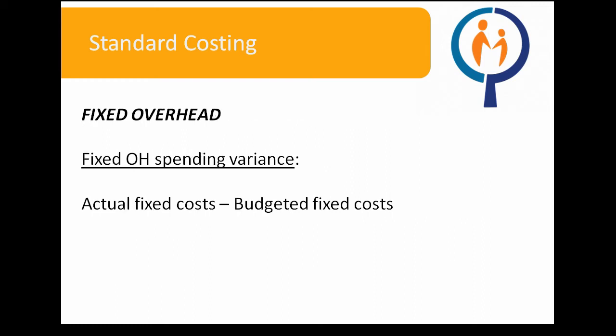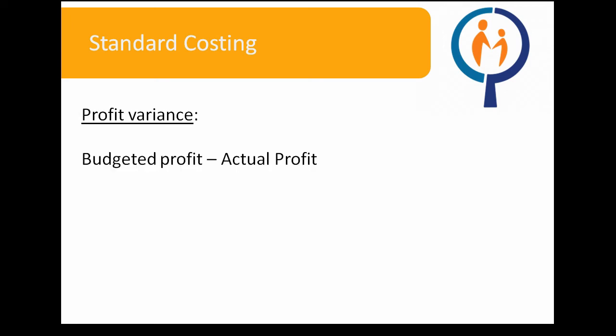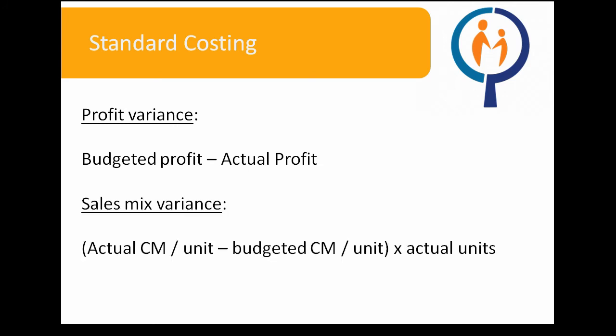The fixed overhead spending variance formula involves taking actual fixed costs and subtracting budgeted fixed costs. The sales price variance formula involves multiplying the actual quantity sold by the difference between the actual price per unit and the standard price per unit, summarized as AQ sold × (AP − SP). The profit variance is defined as the budgeted profit subtracted by the actual profit. Finally, the sales mix variance is the actual contribution margin per unit minus the budgeted contribution margin per unit, times the actual number of units.